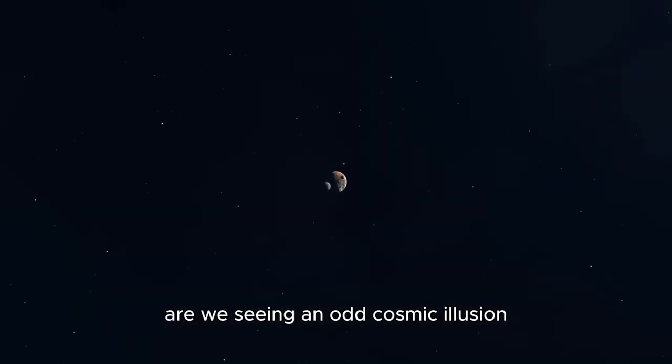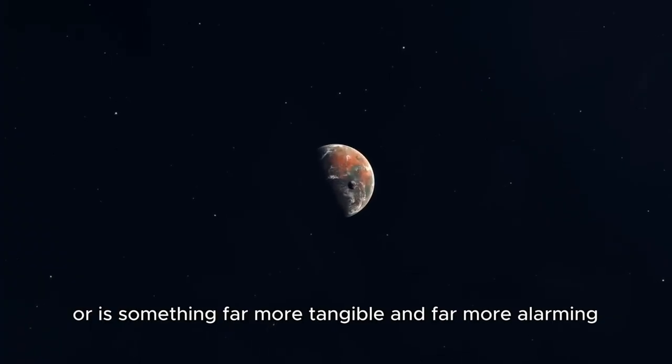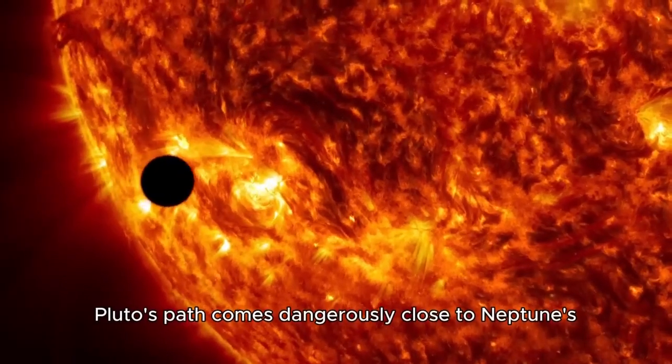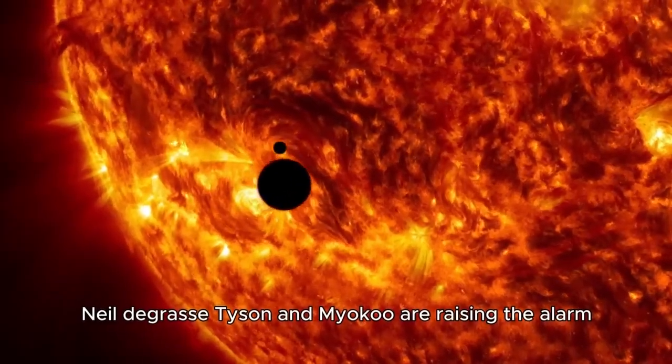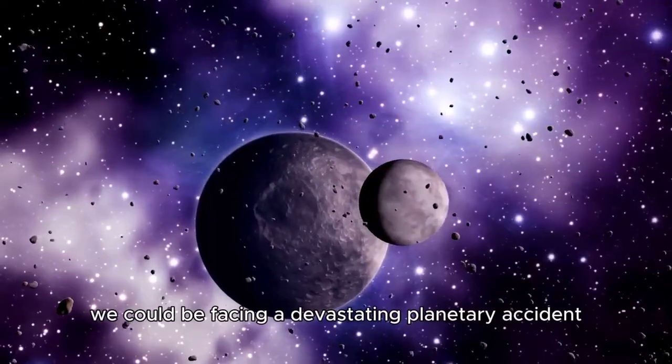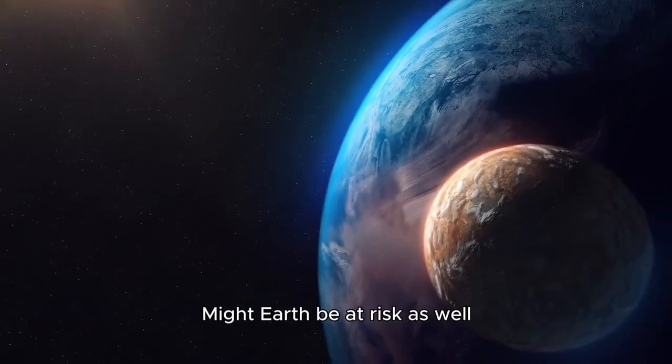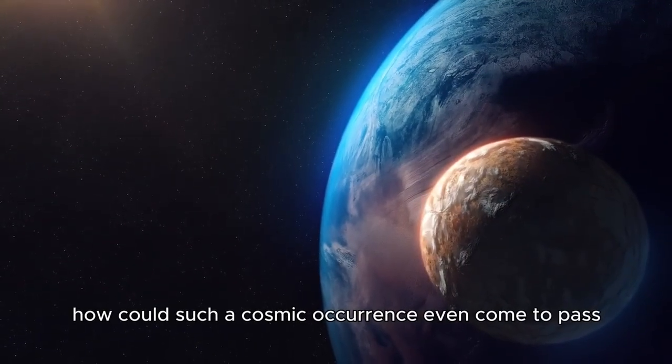Are we seeing an odd cosmic illusion? Or is something far more tangible and far more alarming speeding toward us? Pluto's path comes dangerously close to Neptune's. Neil deGrasse Tyson and Michio Kaku are raising the alarm. If there's even a slight adjustment, we could be facing a devastating planetary accident. Might Earth be at risk as well? More crucially, how could such a cosmic occurrence even come to pass?